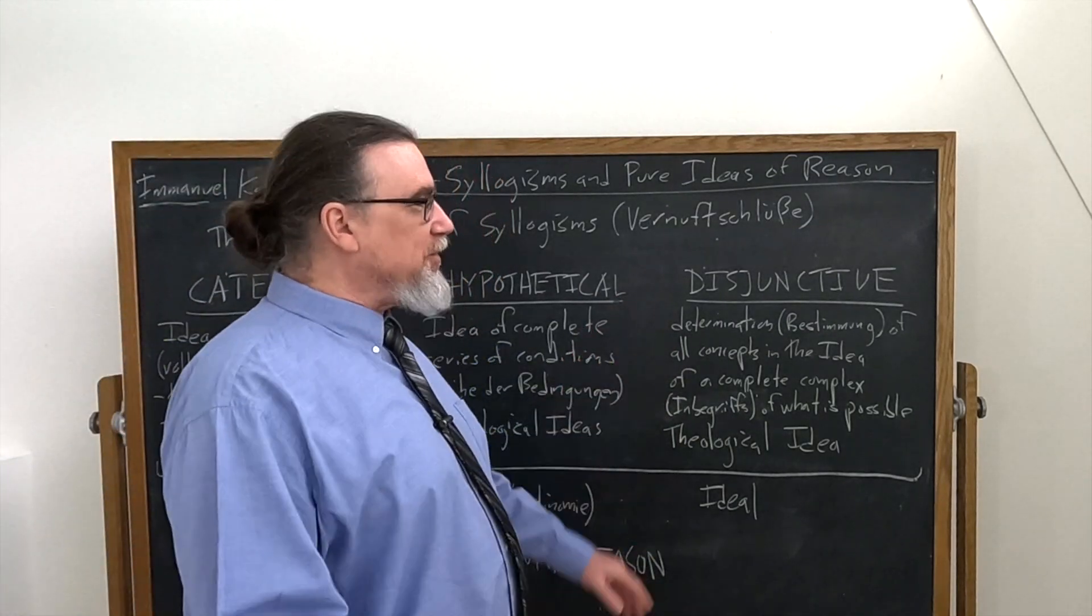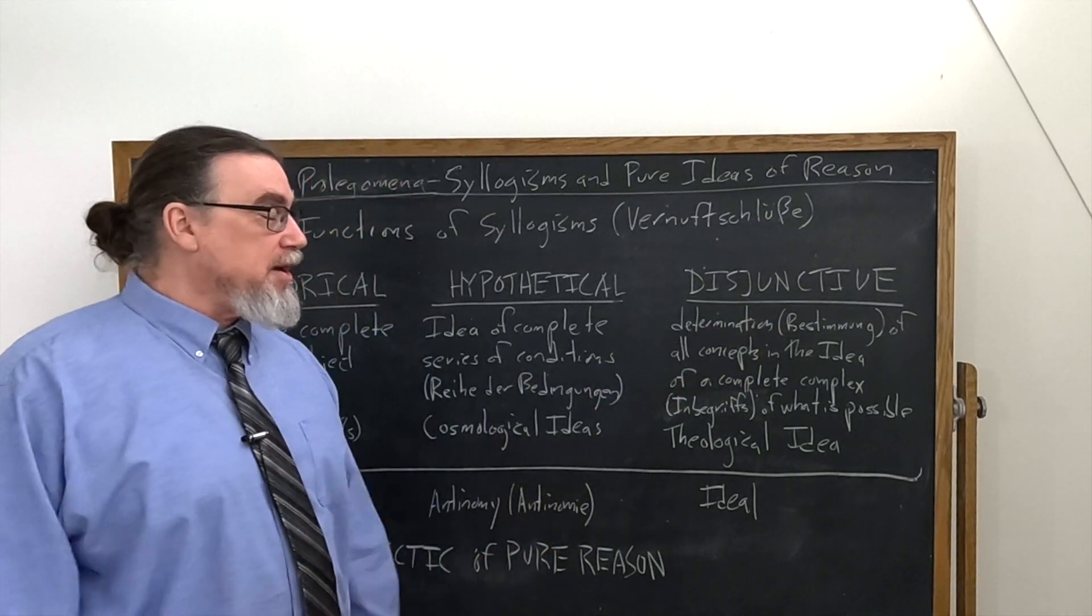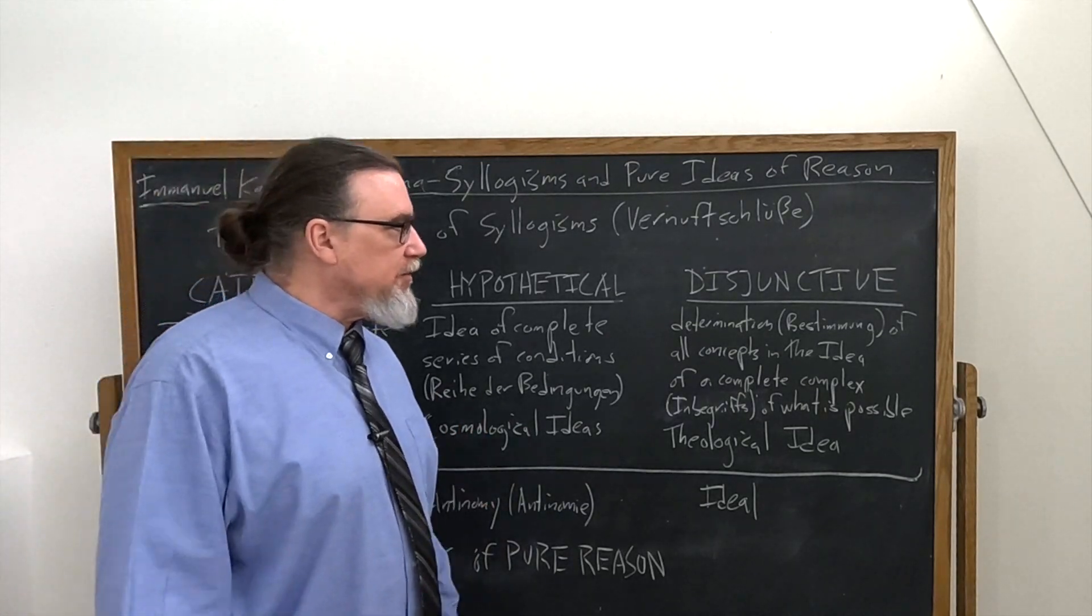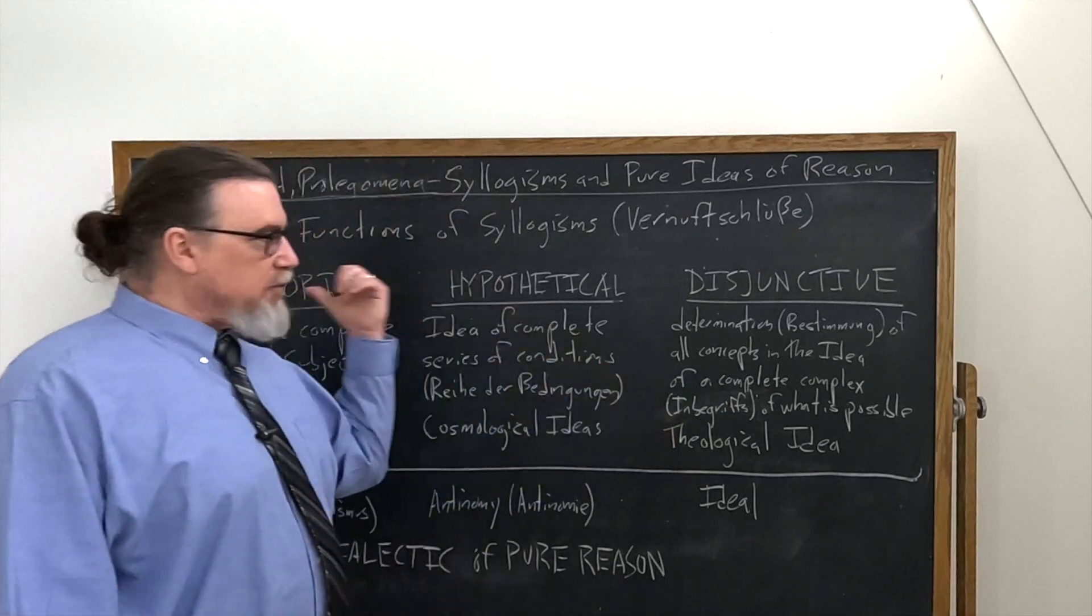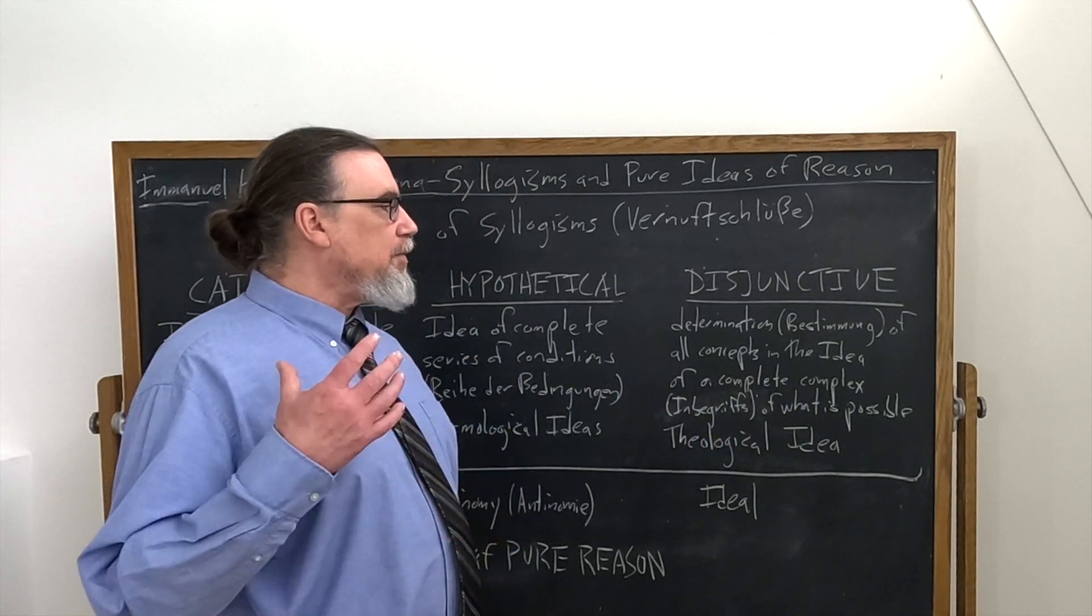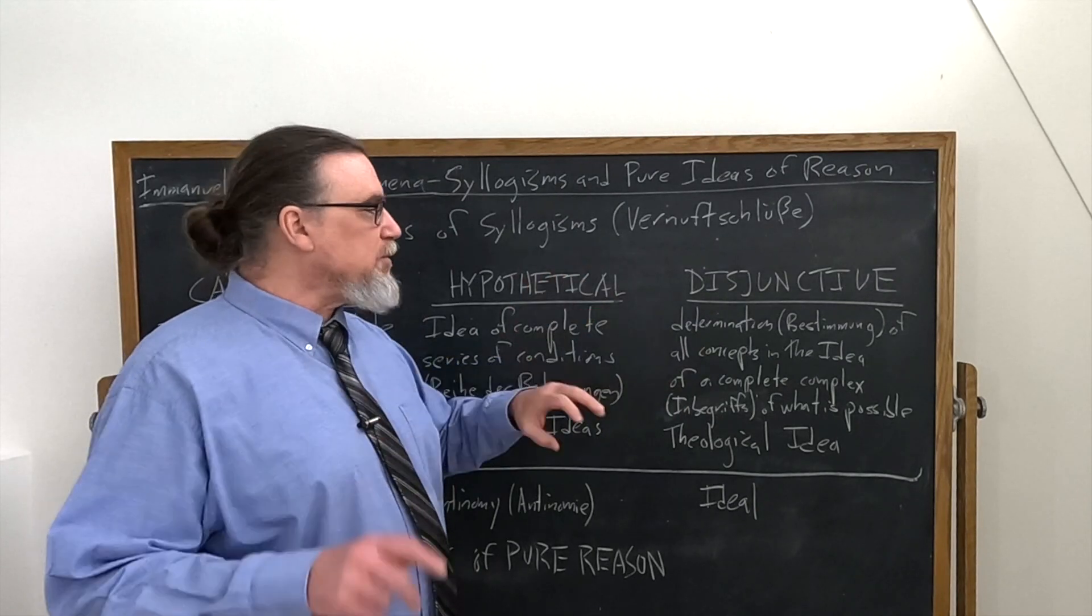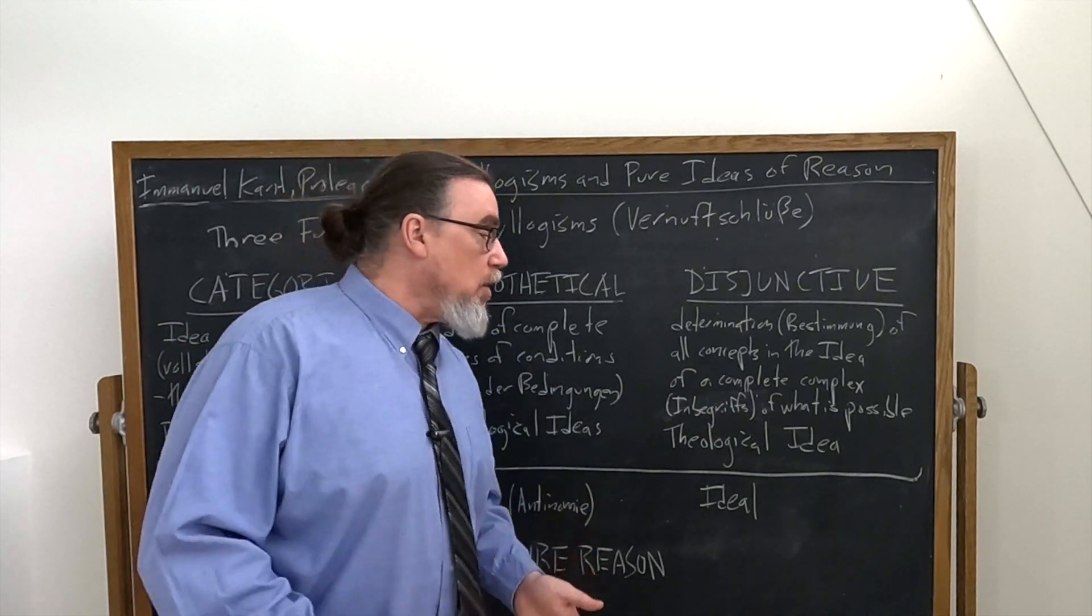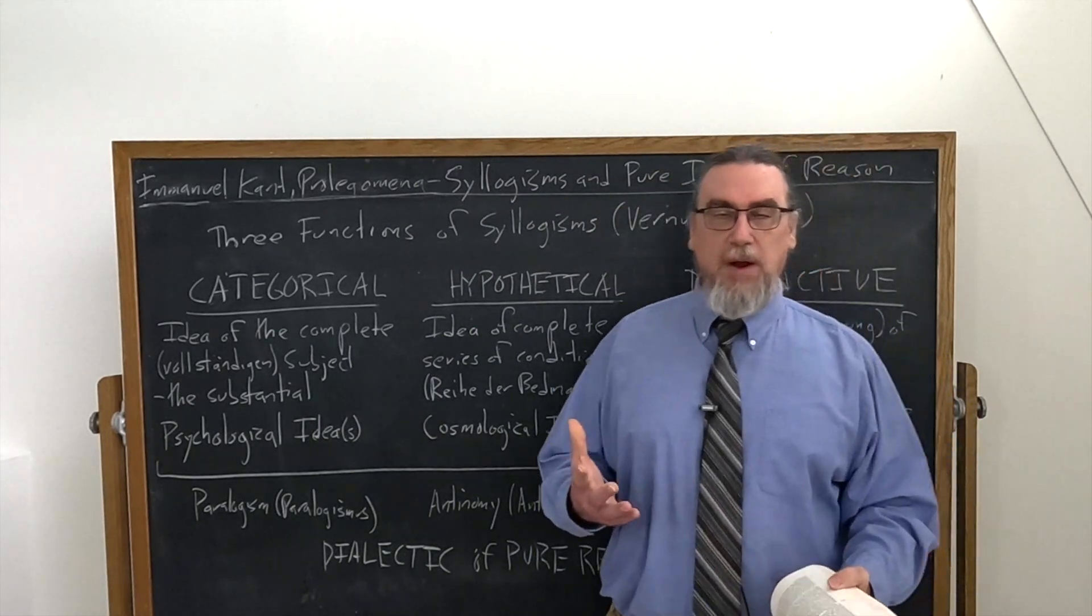Then we get the disjunctive. Now, here's where it starts to get a little weird. So he says, the determination, the Bestimmung, a term that was translated earlier as destination, and we could say harmony as well, or resonance of all concepts, Begriffe, in the idea of a complete, once again, vollständigen complex in Begriffe of what is possible. Everything that is possible. So a determination of all concepts, all possible concepts, in the idea of a complete complex of what is possible. This corresponds to—we've got substance, causality, community. Kant talks about that quite a bit as well.